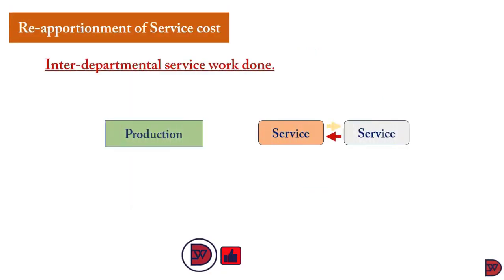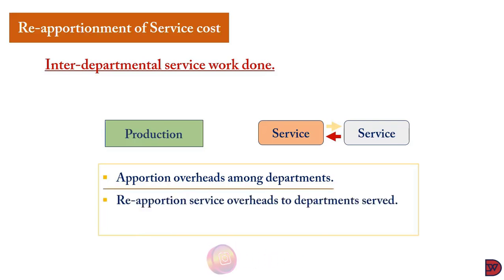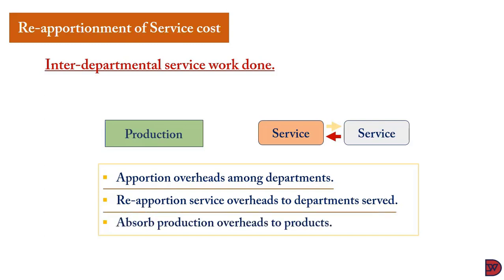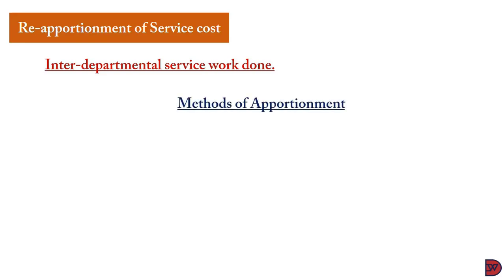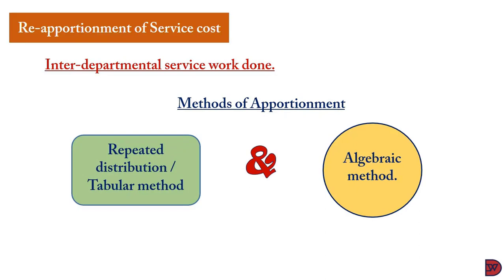We now move to the second scenario where there is interdepartmental service rendering between two service departments. First, we apportion overheads to all departments. Then the service department costs are reapportioned onto departments they serve — including other service departments. We continue reapportioning until costs run out. There are two methods: the tabular (repeated distribution) method and the algebraic method.